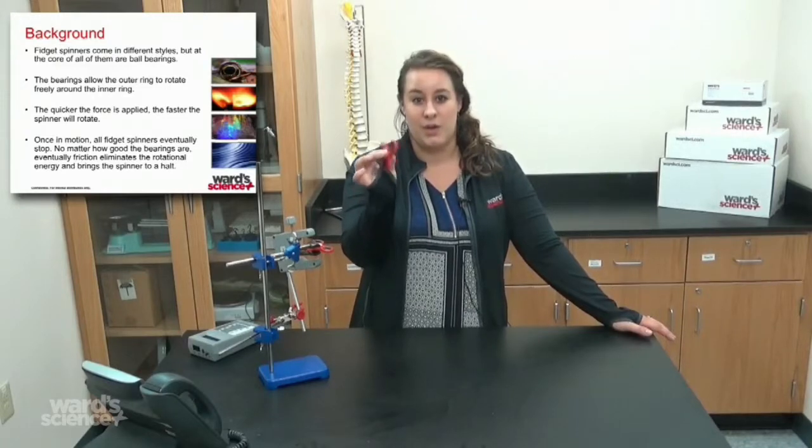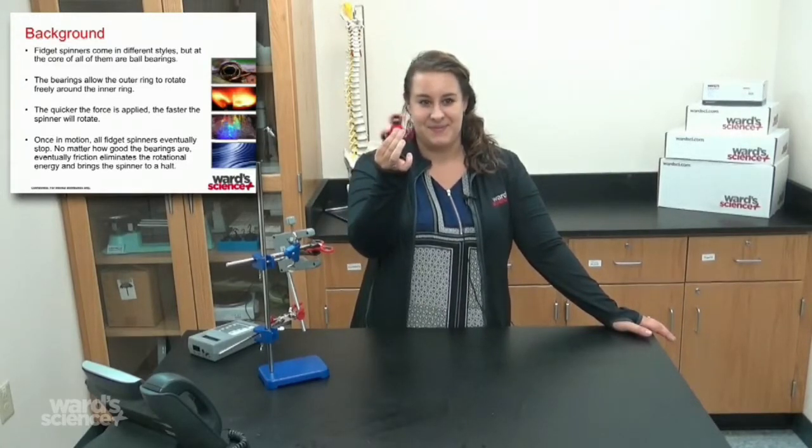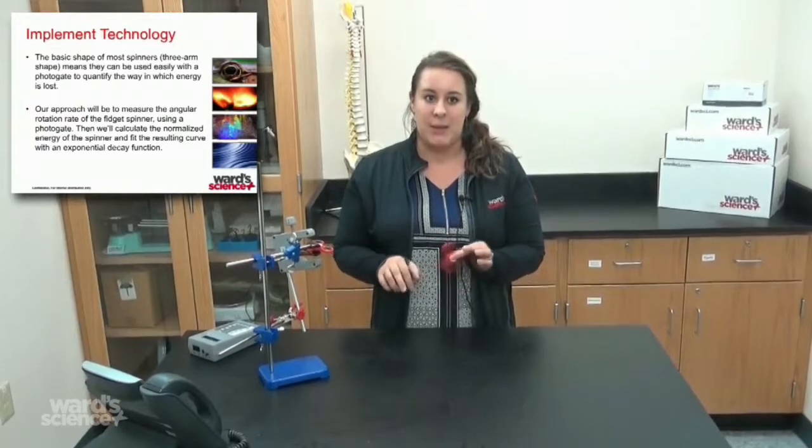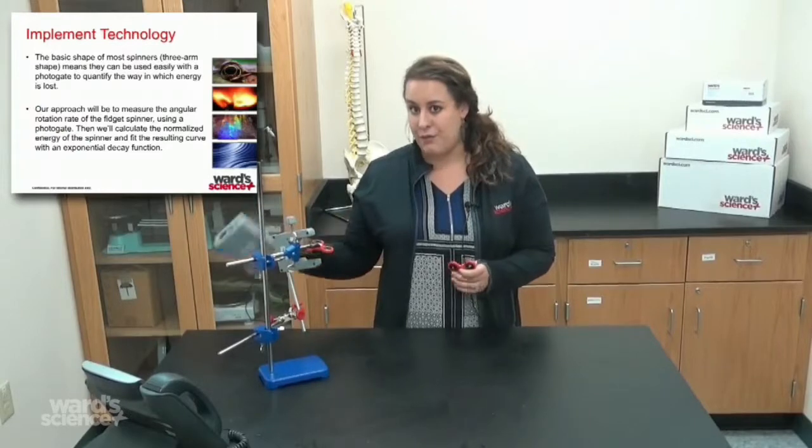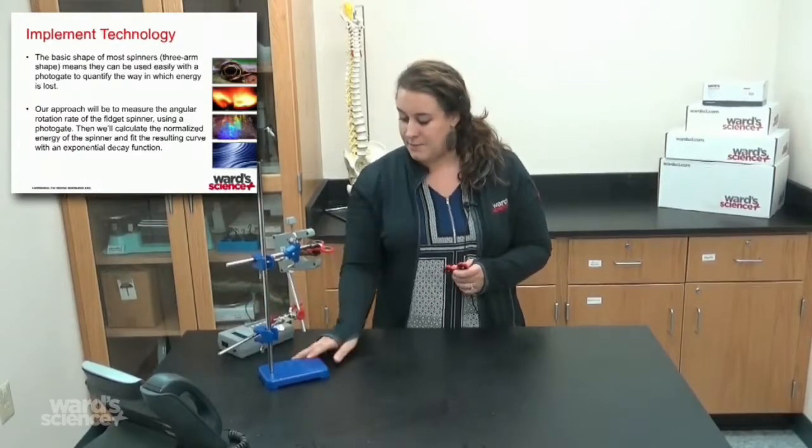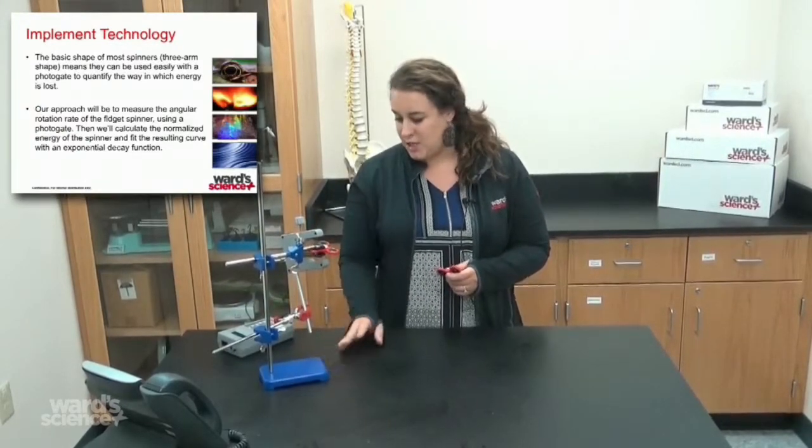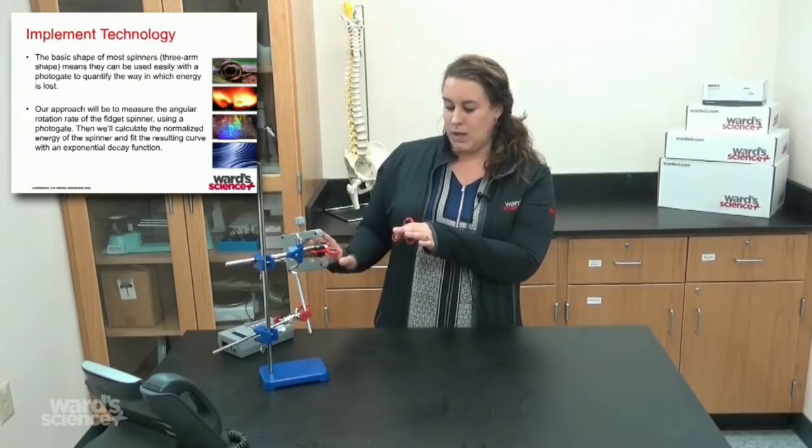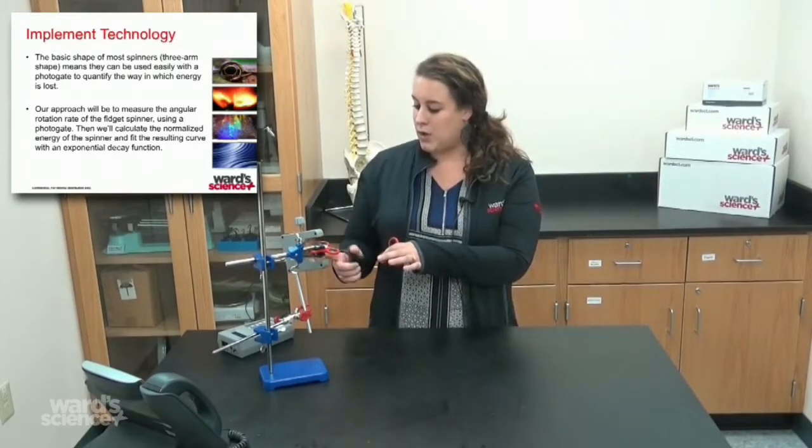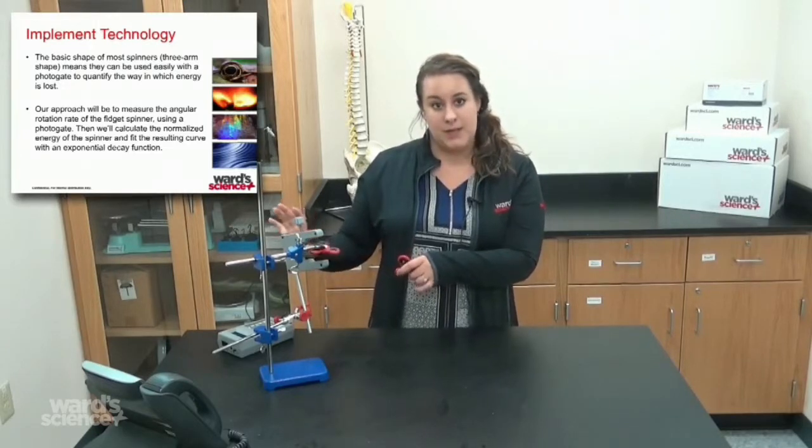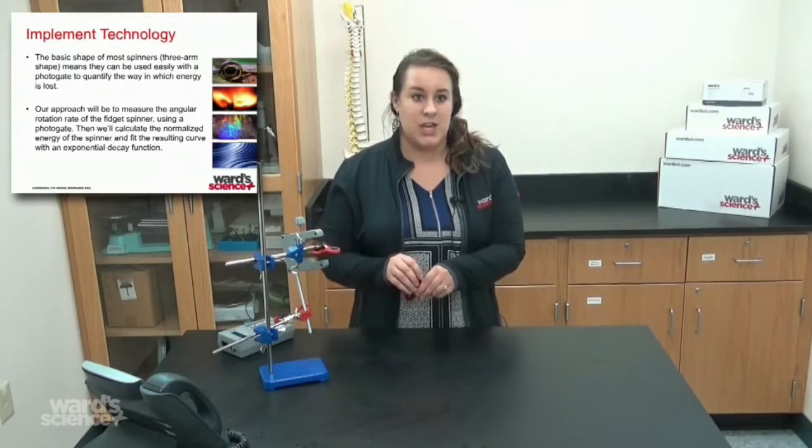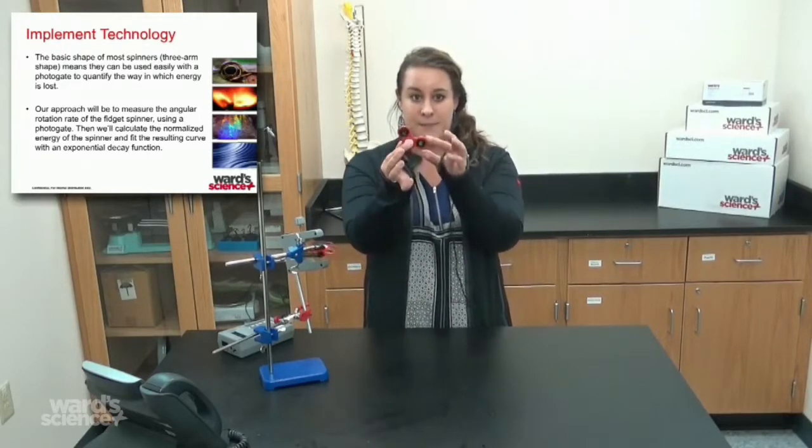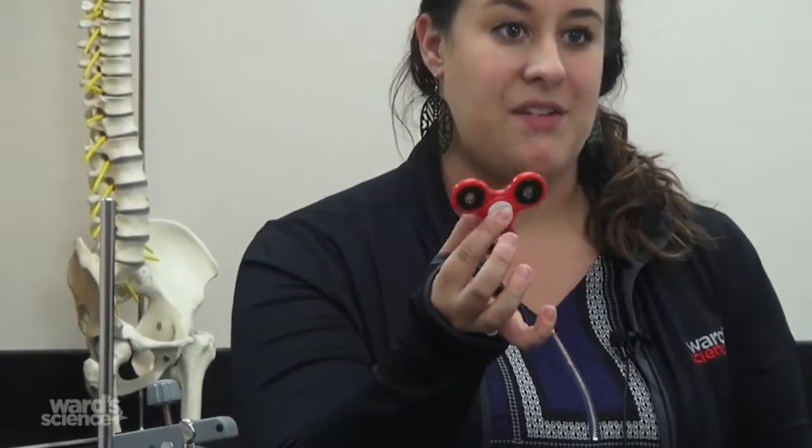As I mentioned earlier, we're going to be implementing technology into the high school section. As you can see here, I have a photo gate and timing system. I won't touch it too much because it's kind of set up nicely and I don't want to destroy it. We have a photo gate set up here that's going to be collecting data for us. The basic shape of most spinners is a three-arm shape, and they can be used easily with a photo gate to quantify the way in which energy is lost.